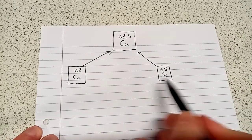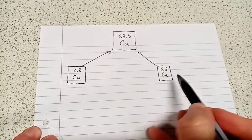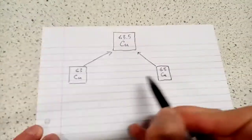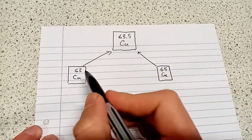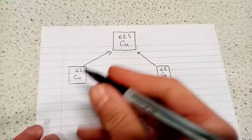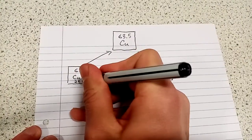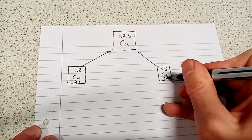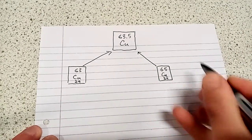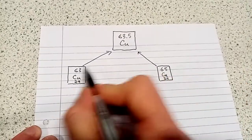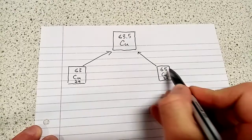So isotopes are atoms of the same element. So these are both atoms of copper that have got the same number of protons and the same number of electrons. Both of these have got 29 protons. But they've got a different number of neutrons, and therefore a different mass number.